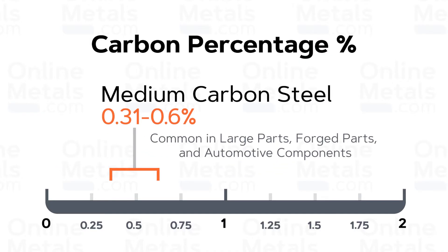Medium carbon, with carbon content ranging from 0.31 to 0.6 percent, is stronger and harder than mild steel, but is more difficult to weld and form. It is common in large parts, forged parts, and automotive components. A common example is 1045.